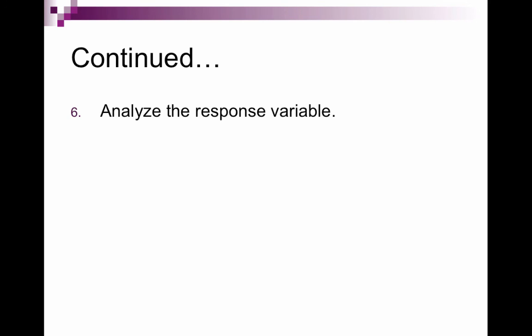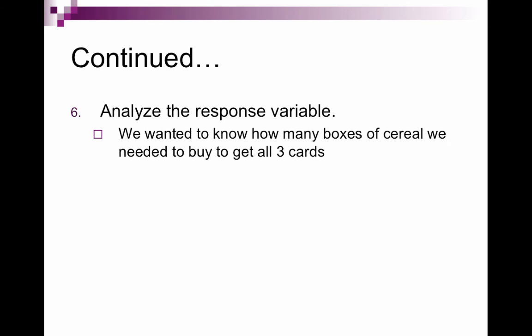The sixth step is to analyze the response variable. We want to know how many boxes of cereal we need to buy to get all three. So in this case, we're going to average the results of each trial. So I would add them all up, divide by how many there are, and I get 7.8.